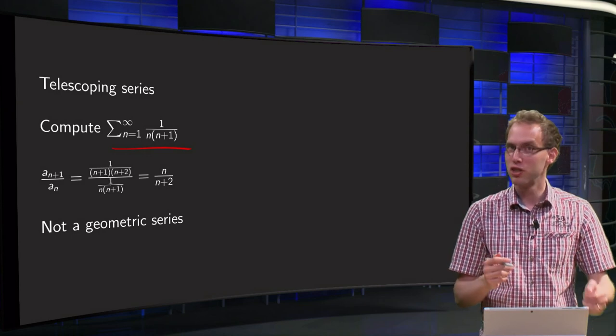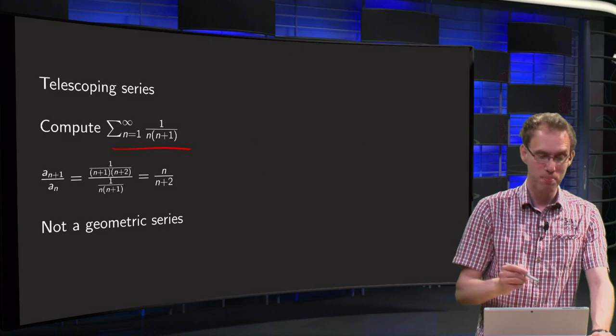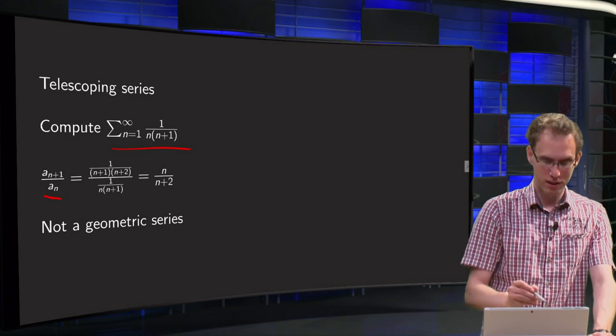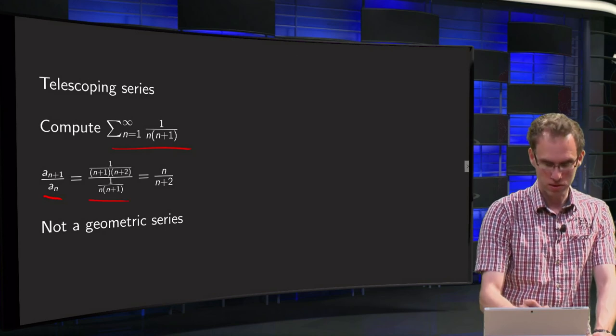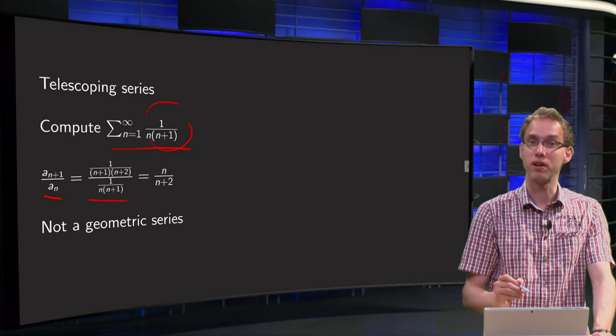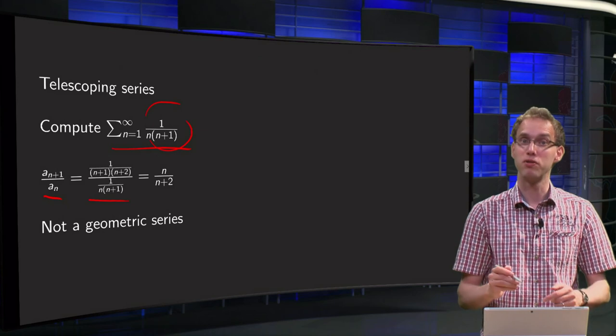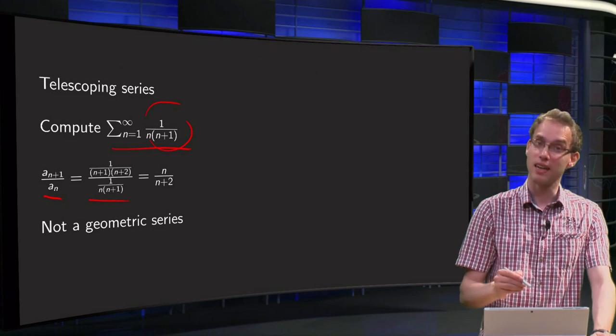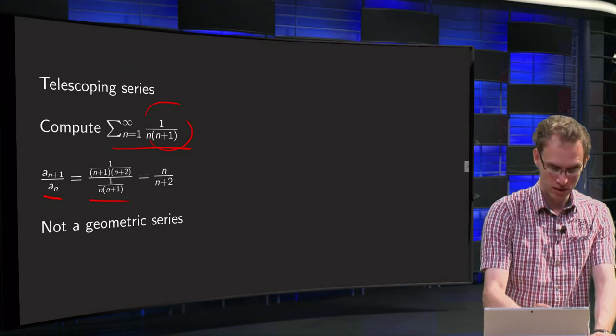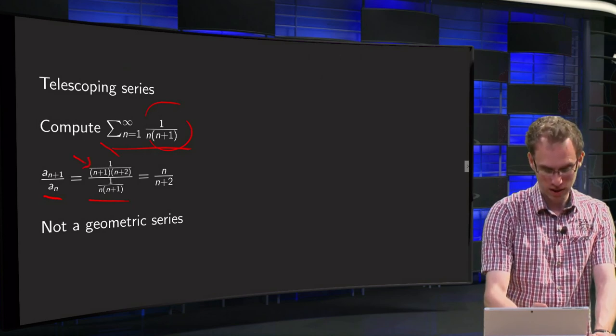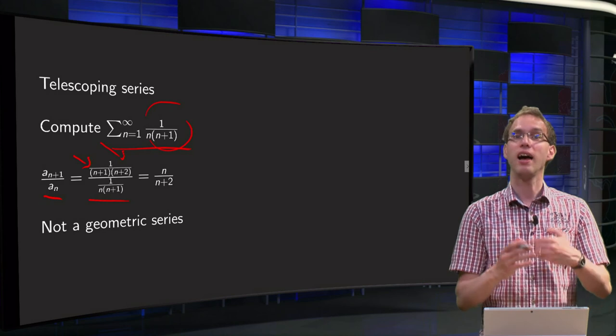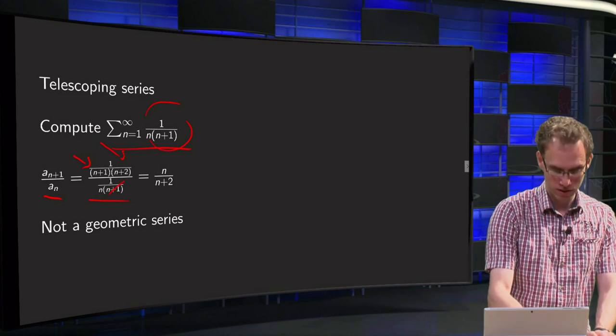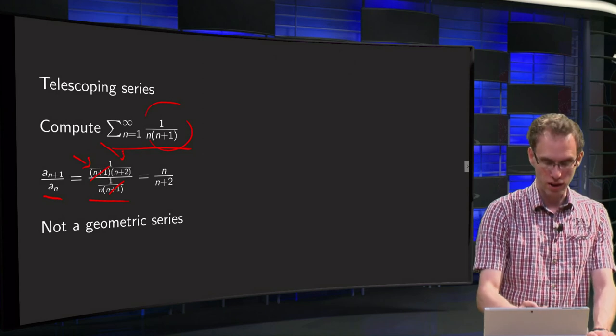Let's see whether this is a geometric series, because then we are happy. So we compute a n plus 1 over a n. Division by a n is easy because it is just a sum over here: 1 over n times n plus 1 and a n plus 1. Then you have to substitute n plus 1 for n in the expression, so we get n plus 1 times n plus 2, and you can simplify that a bit because the factors n plus 1 will cancel out to n over n plus 2.